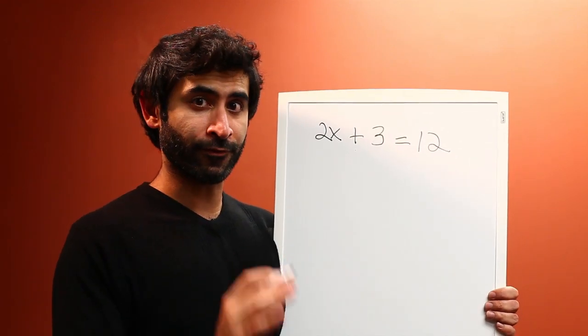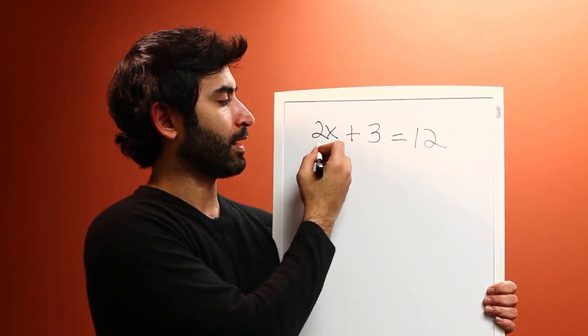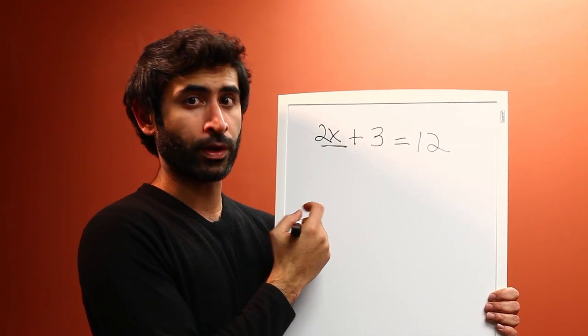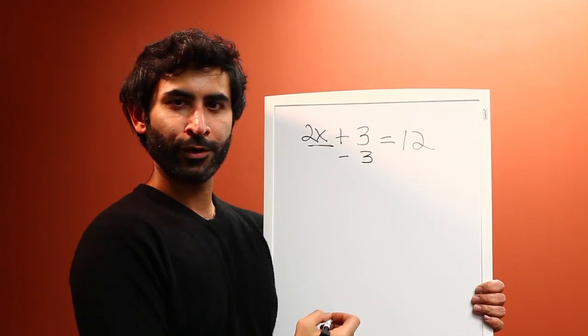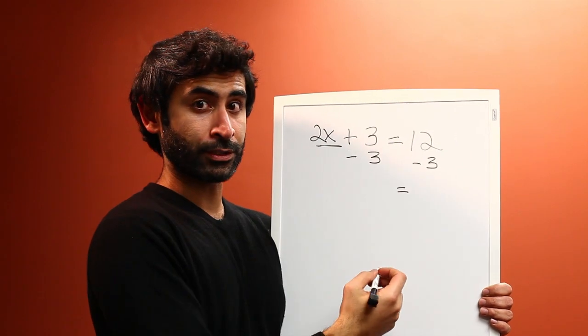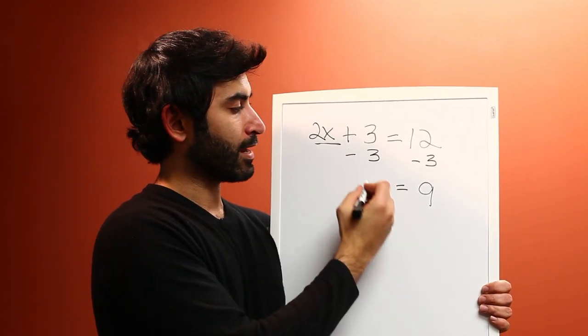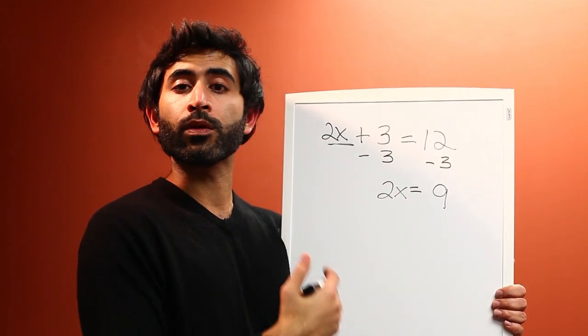So now let's continue to find X. What do you do? First you want to isolate this 2X on one side of the equation, which is the left side. So why don't we subtract 3 from both sides - minus 3 here, minus 3 here. 12 minus 3 is 9, and the 2X carries down. 2X equals 9.